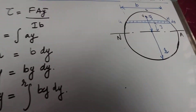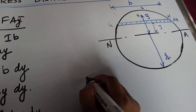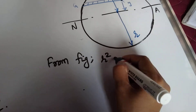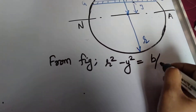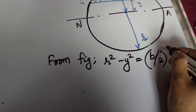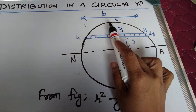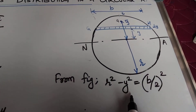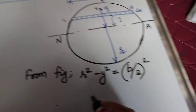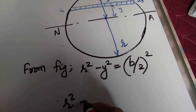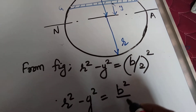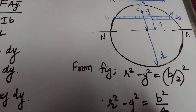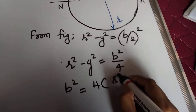From the figure we can write that r² - y² = (b/2)². Considering the right triangle, (b/2)² = r² - y², so b² = 4(r² - y²).